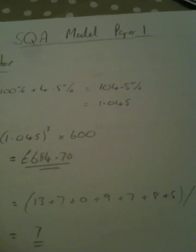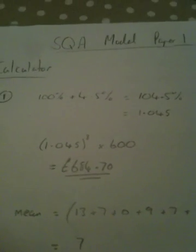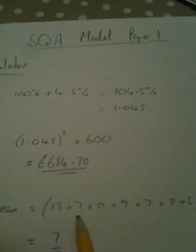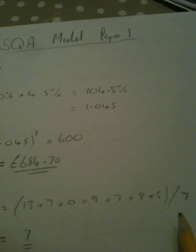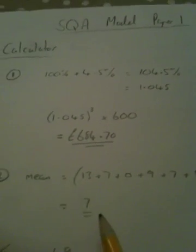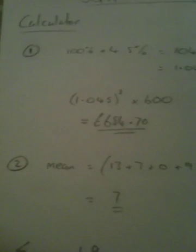So 13 add 7 add nothing add 9 add 7 plus 8 plus 5 is 49. Divided by 7 is 7. And we need to work out standard deviation.